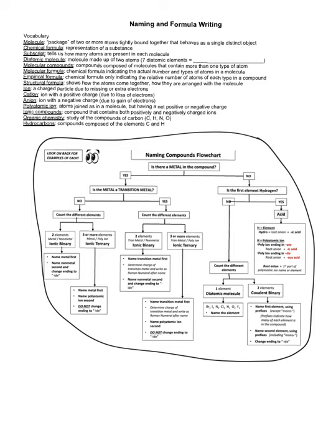Before we get into naming, a couple of common things to understand: a molecule is where we are looking at two or more nonmetals bonded together. That typically forms a molecule, which is an example of a covalently bonded compound with a different naming system than ionic. An ionic compound contains a metal and a nonmetal if it is a binary compound. If it has more than two elements, it'll typically have a metal plus a polyatomic ion.